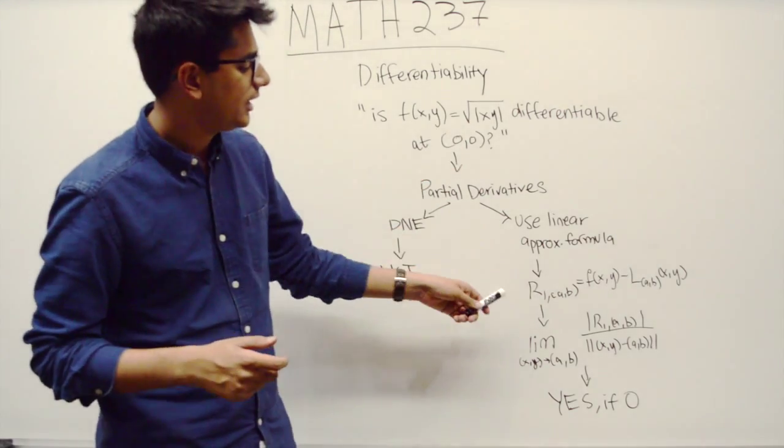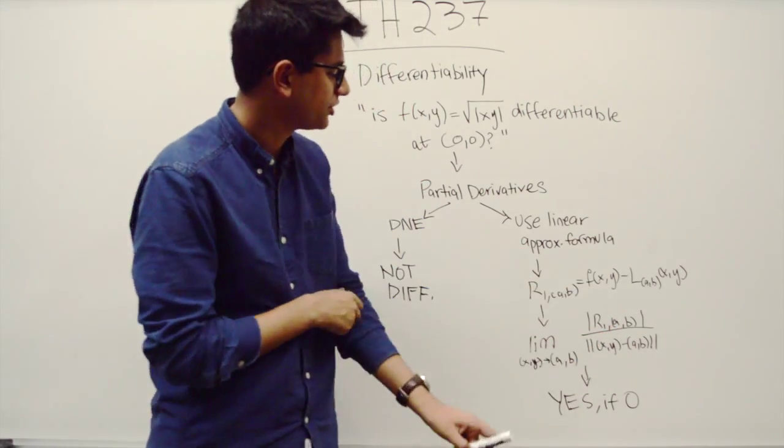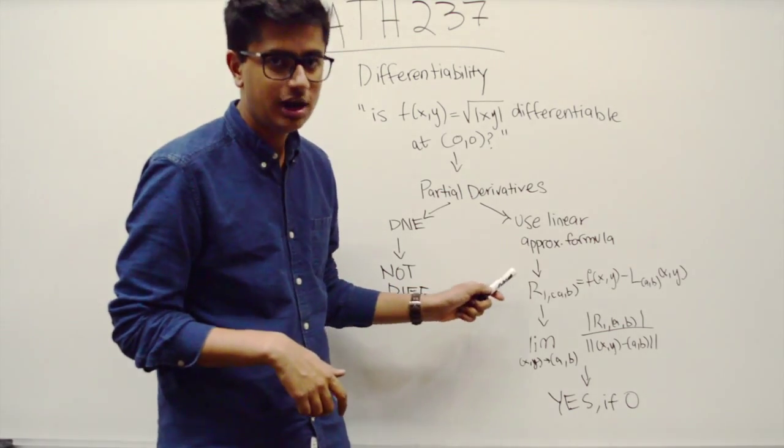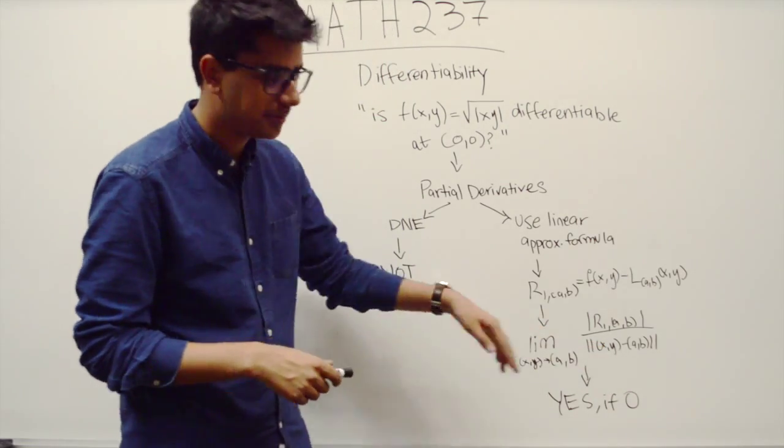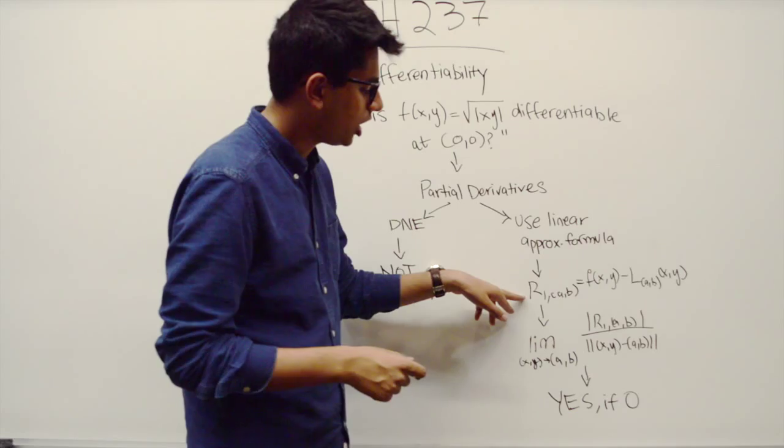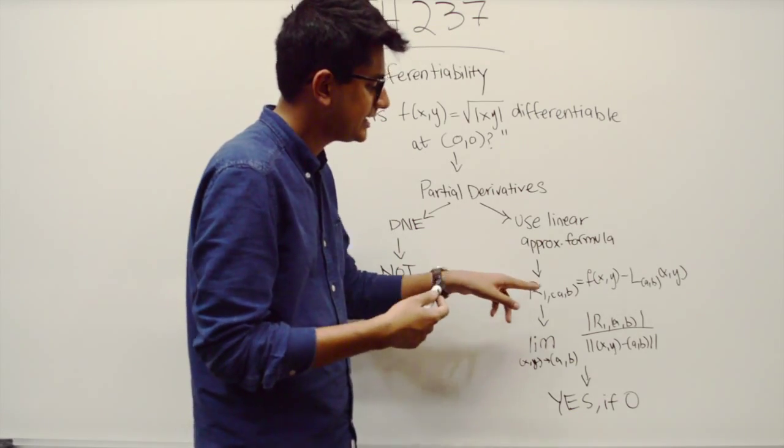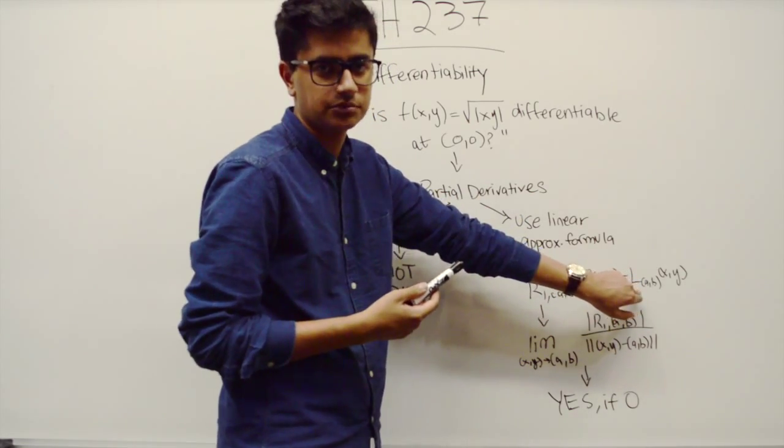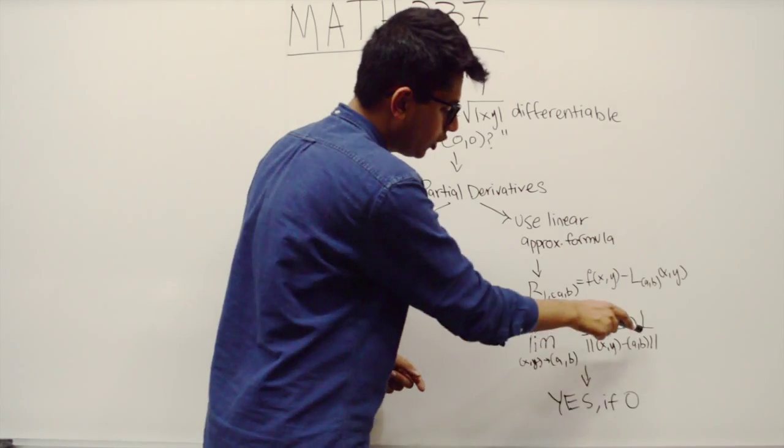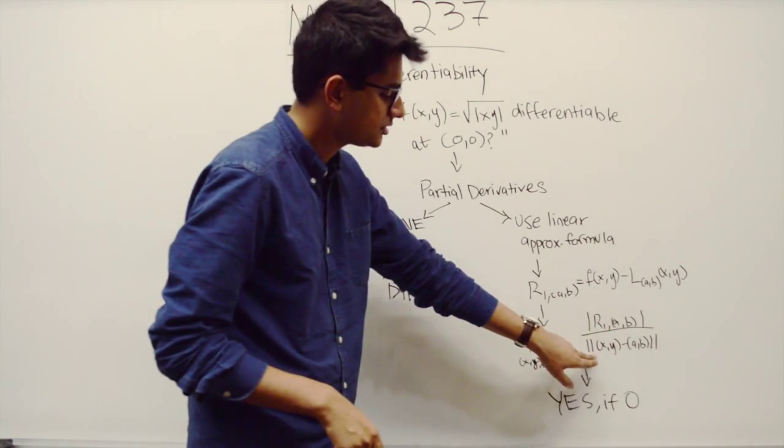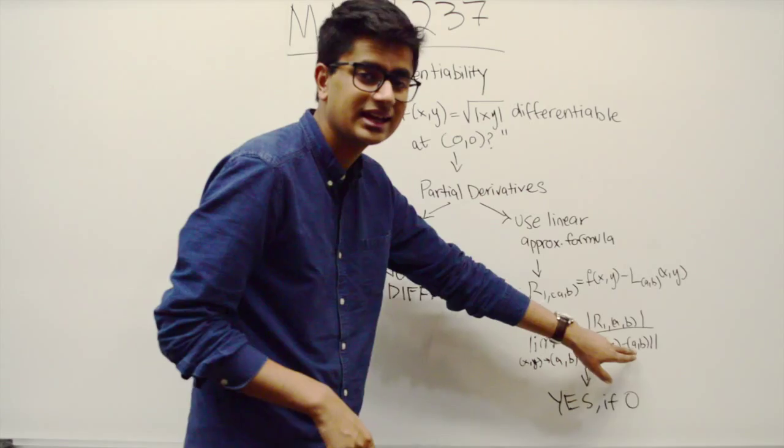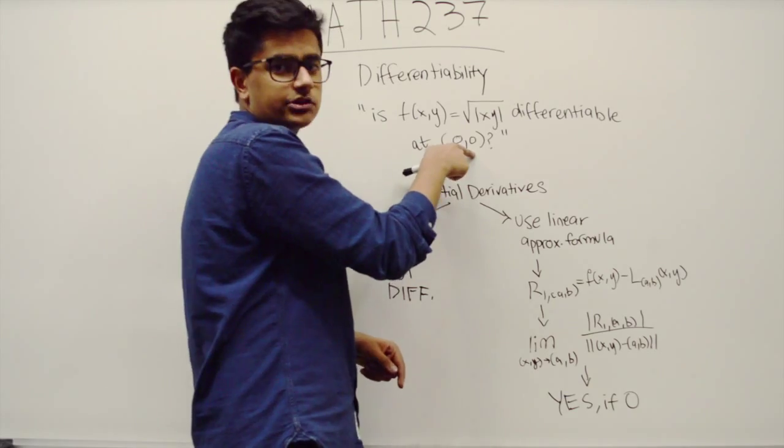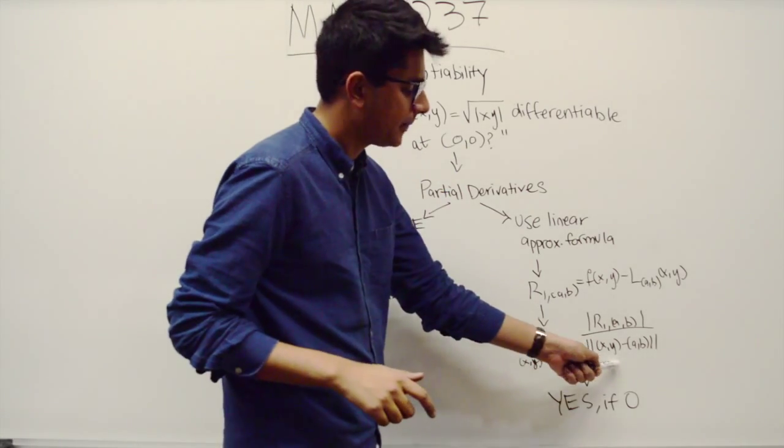Now that you have that, you need to substitute into this equation, which basically means you need to find what the remainder is, and if it goes to zero faster than the distance in the denominator. You find r1, which is the remainder, by taking f(x,y), which is your function, and subtracting the linear approximation that you just found. Divide all of it by the magnitude of the distance between (x,y) and your given point (a,b).